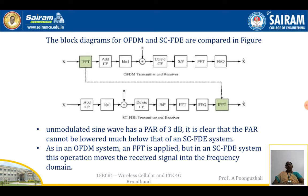Here the basic block diagram for OFDM and single carrier FDE are going to be compared. We are going to see why single carrier FDE is used in the uplink because of the low peak-to-average power ratio. In OFDM, the IFFT block is introduced at the transmitter side, which causes a higher peak-to-average ratio. But in single carrier frequency domain equalization, the IFFT block is used at the receiver side, giving the advantage of low peak-to-average power ratio.